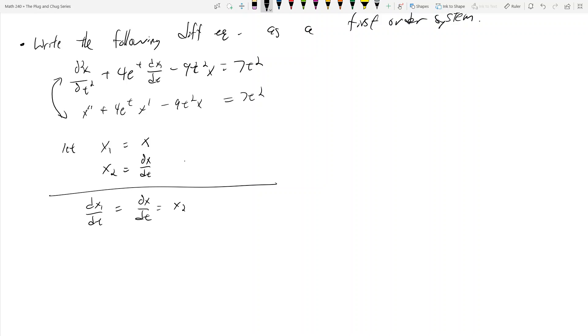Alright, so now what? Well now what you want to do is you want to find what dx2 dt is, which is the same thing as taking the derivative of dx dt. So now this is equal to d dt of dx dt, which is d squared x dt squared. And what is d squared x dt squared?